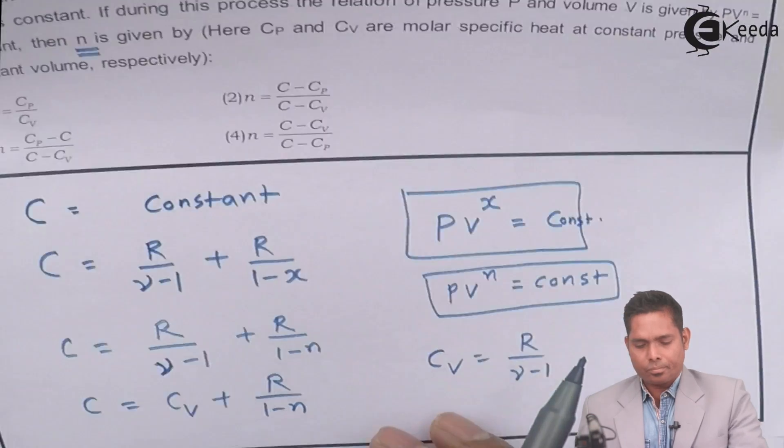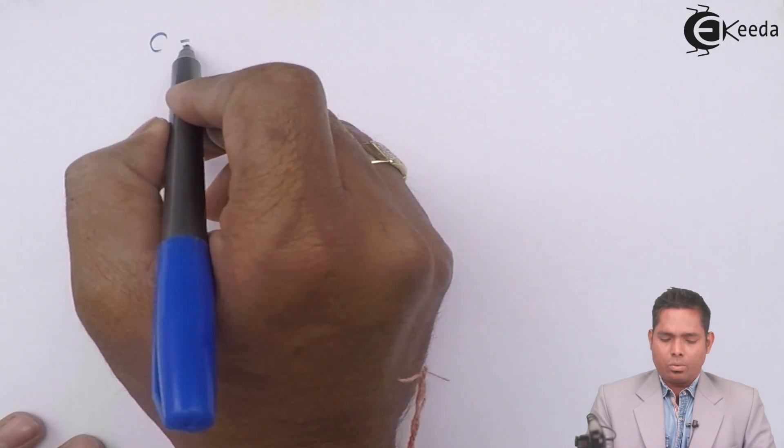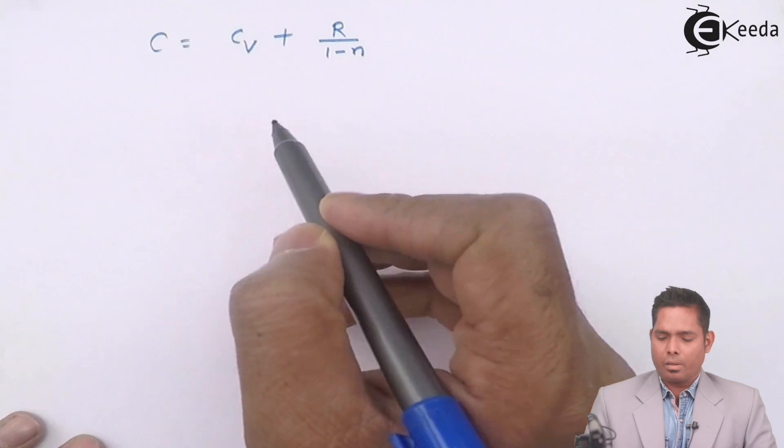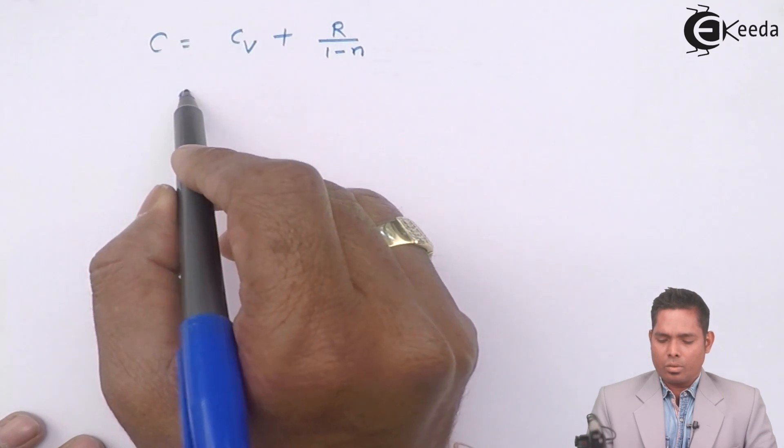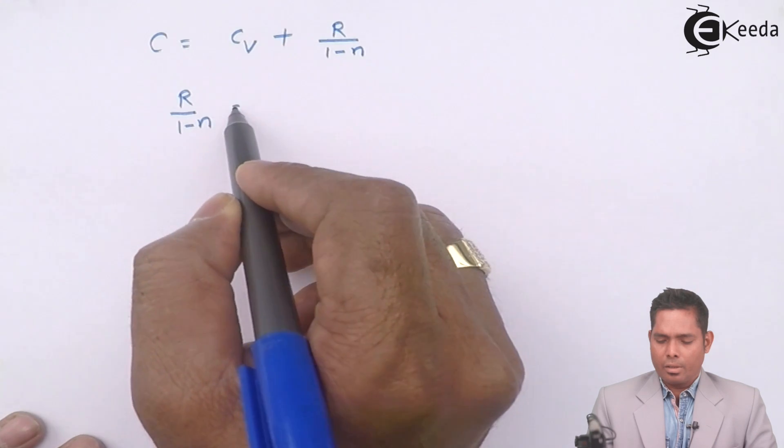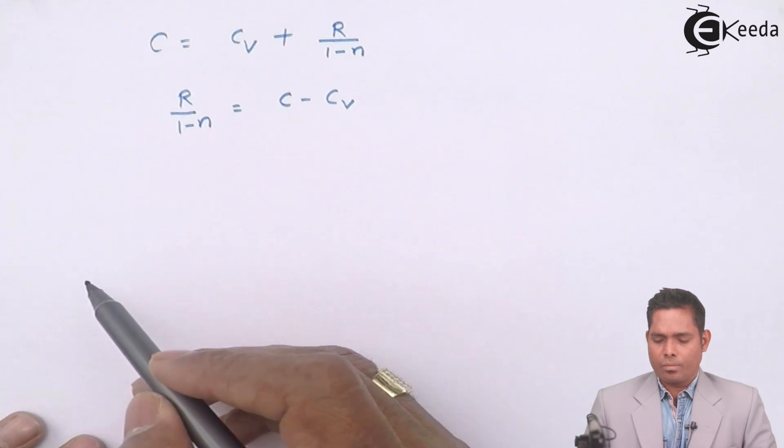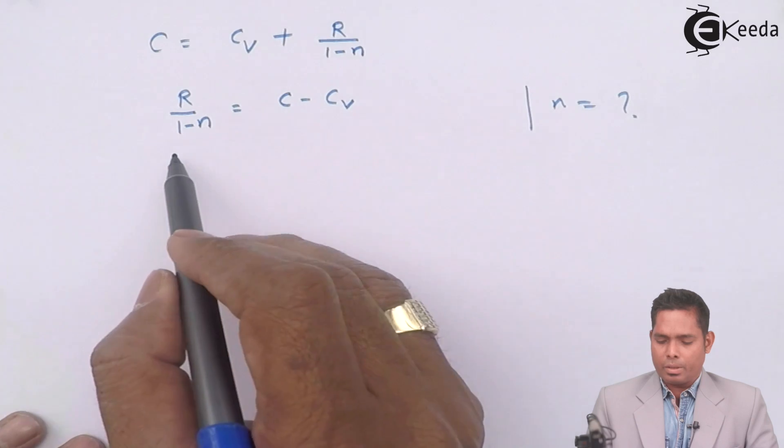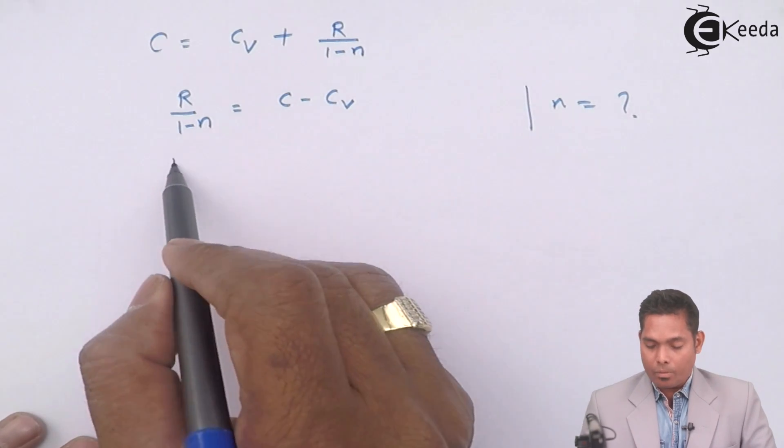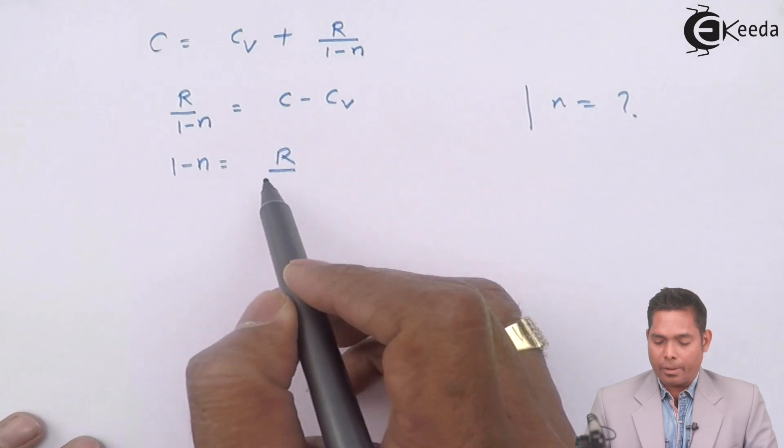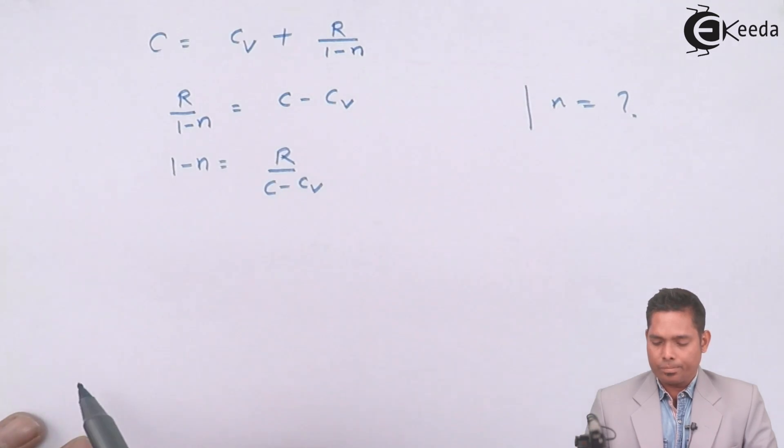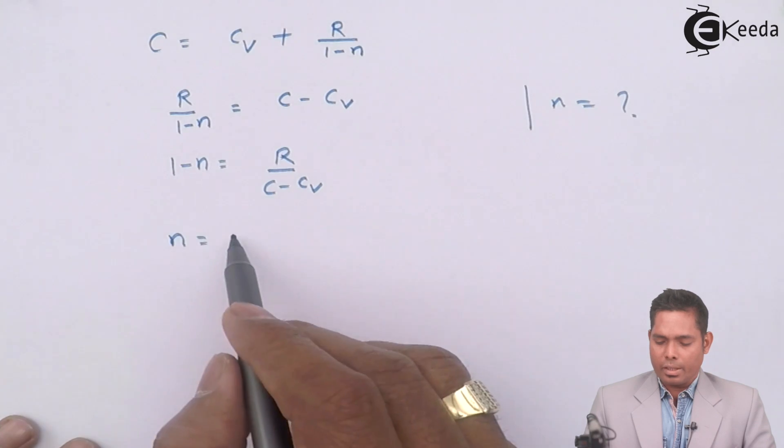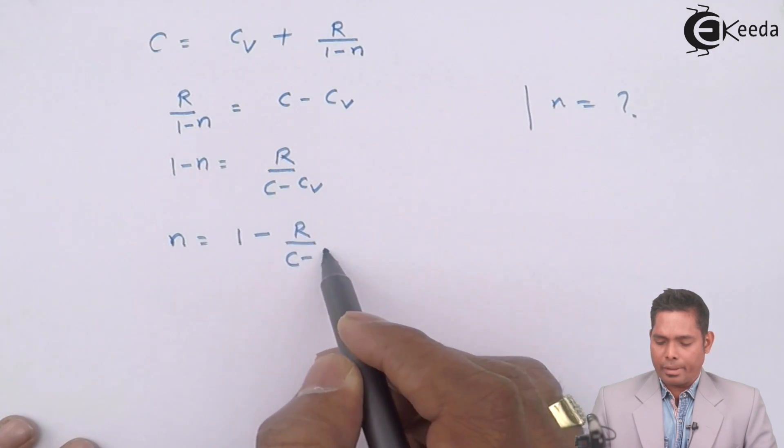Let us rearrange that. C equals Cv plus R divided by 1 minus N. So I bring this to this side. So this is R upon 1 minus N equals C minus Cv. So I have to find N. I am looking for N. So I will bring that to that side. 1 minus N equals R divided by C minus Cv. So N will become, if N goes to that side, this goes to this side, 1 minus R divided by C minus Cv.